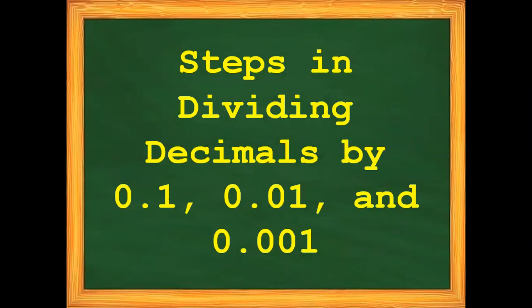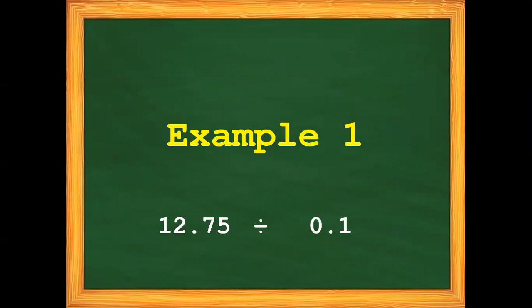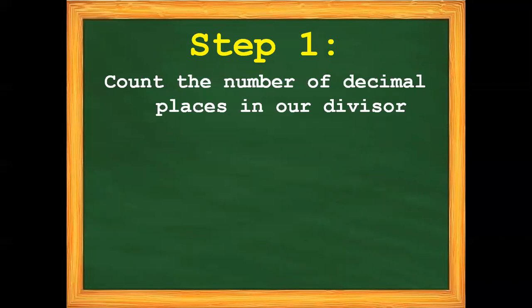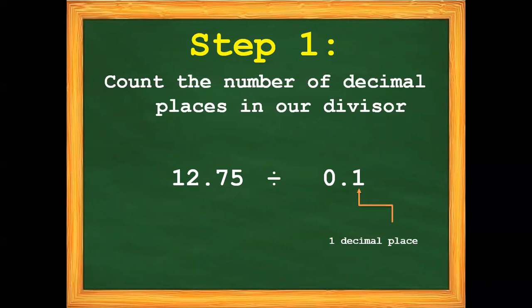And to solve the problem, we need to follow the steps in dividing decimals by one-tenth, one-hundredth, and one-thousandth. Let's proceed with our first example: twelve-and-seventy-five-hundredths divided by one-tenth. In this case, our divisor is one-tenth. How many decimal places do we have in one-tenth?